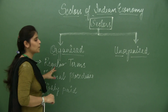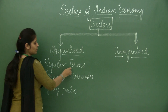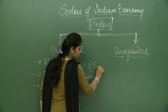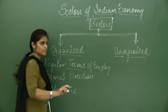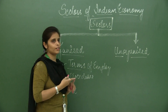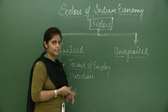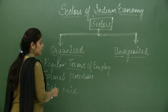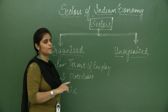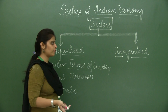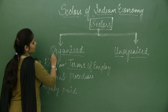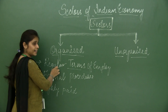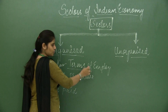Suppose a person is working in a bank — it has regular terms and conditions of employment. For example, he knows that he will get leave on the 1st and 4th Saturday, Sundays, and gazetted holidays, and his regular working timings would be predefined — he has to reach the bank at 10 and leave at 5 or 6. That is the rules and policy of the organized sector, which contains regular terms and conditions of employment.